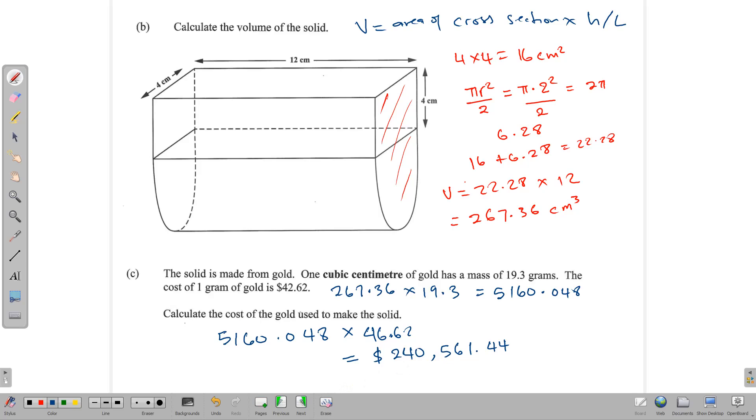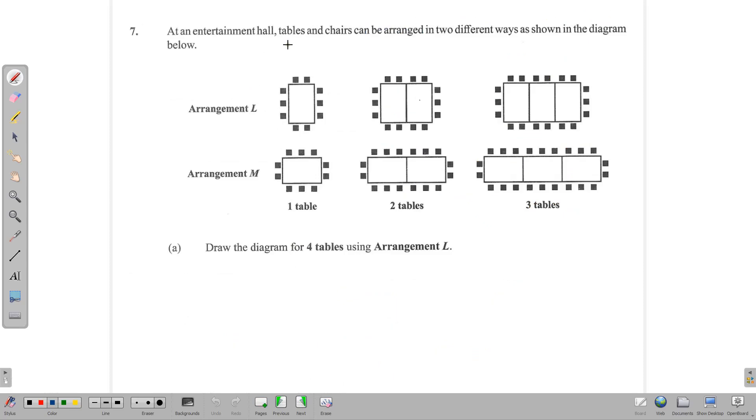Moving on to our next question. We have, at an entertainment hall, and this is our pattern and sequence question, tables and chairs can be arranged in two different ways, as shown in the diagram below. And so we have arrangement L, which is vertical, and arrangement M, which is more horizontal. And we have it for three diagrams. The question says draw the diagram for four tables using arrangement L. So we draw it for that one. Of course, you would simply just add on another block there, put in two, and these three people would sit on the outside, and two people up there. That would be the fourth one. And then we move to the table.